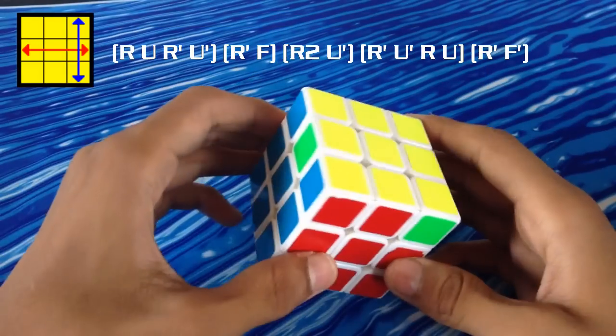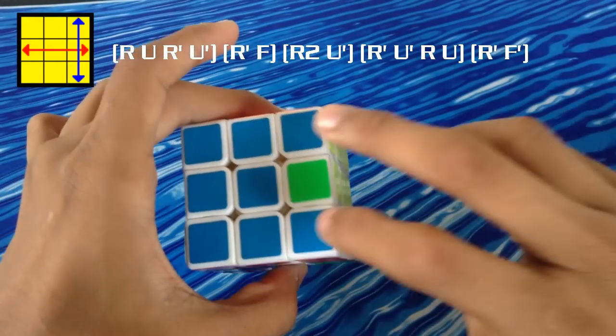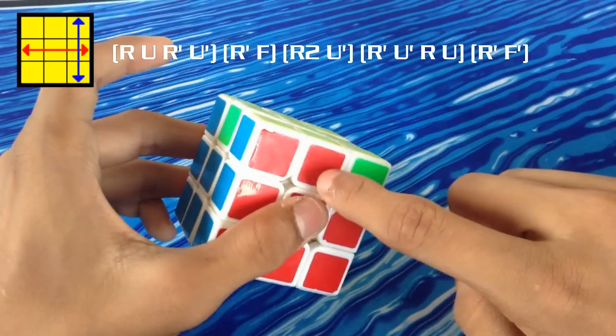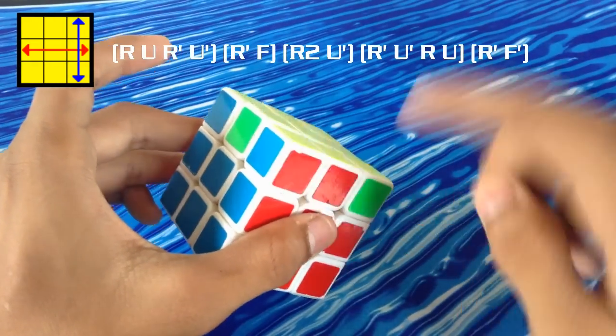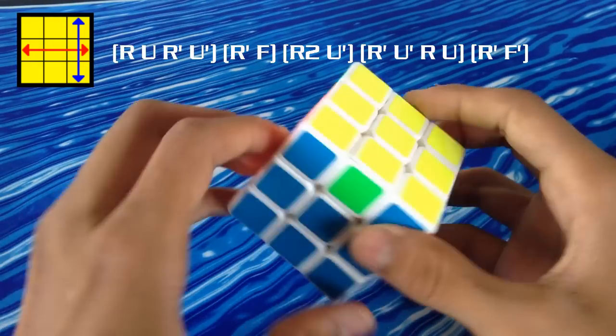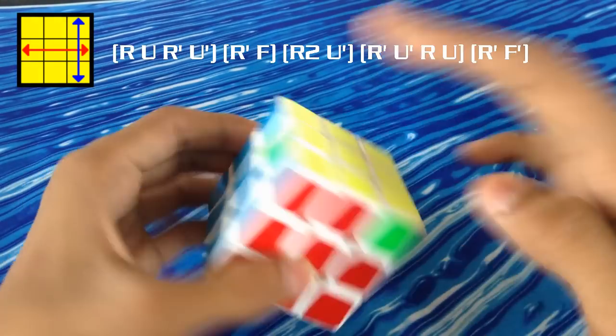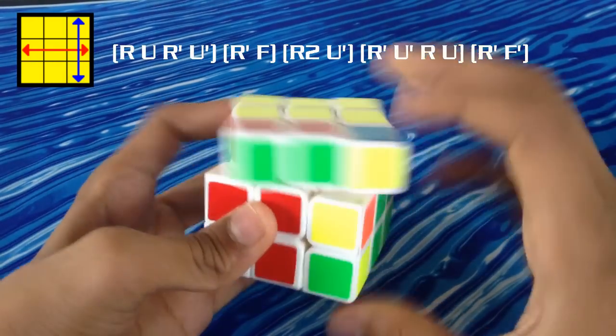At number 5 we have the T-perm. It is easily recognizable because it has headlights and two are connected on the left and also on the right. All you have to do is keep the headlights to the left and apply the algorithm.